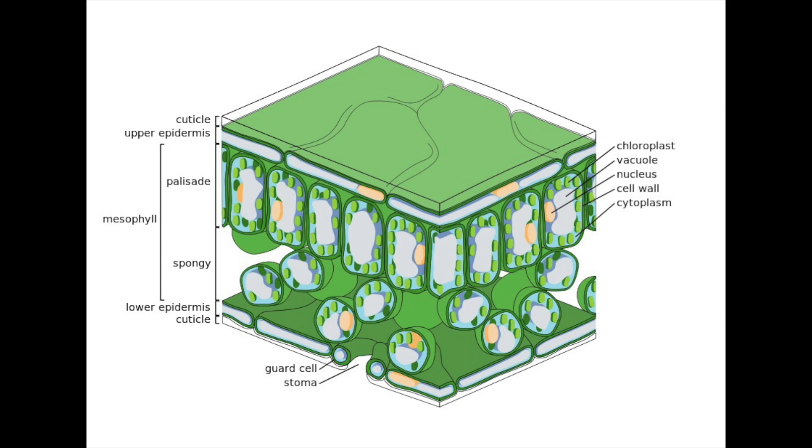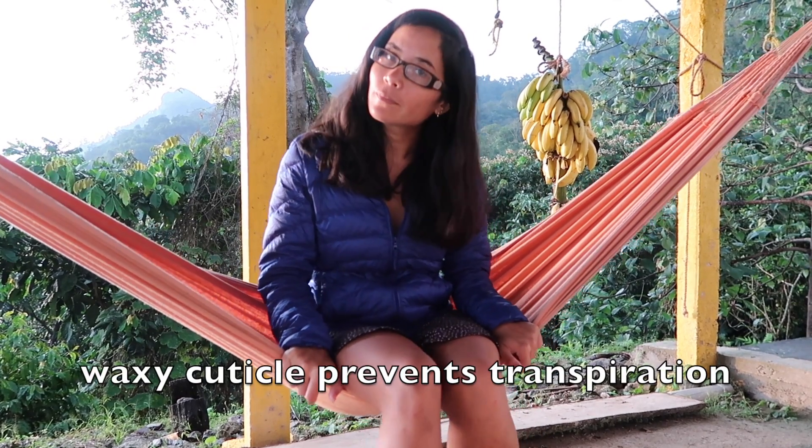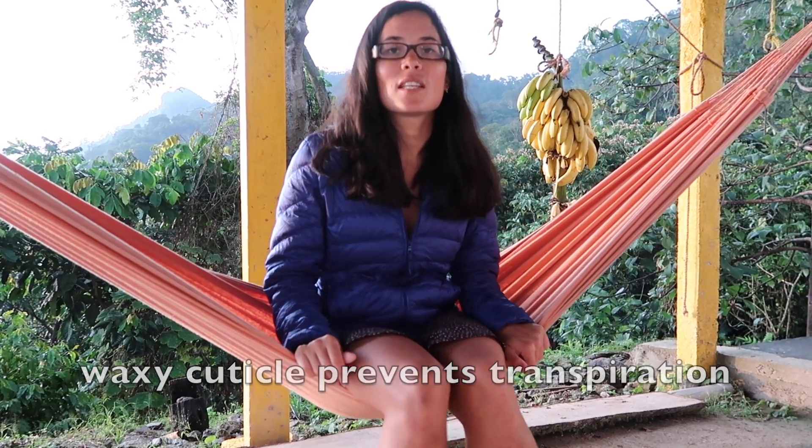Now the leaf of a plant is adapted to enable it to photosynthesize as efficiently and effectively as possible. So with the leaf, remember we're looking at it from the side view, so we're going to start at the topmost layer and work our way down. So first of all we have the waxy cuticle. Now if they ask you what the role of the waxy cuticle is, it's to prevent transpiration. I'm going to talk about what transpiration is in a moment.